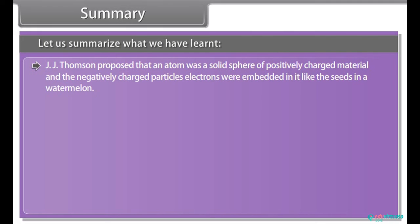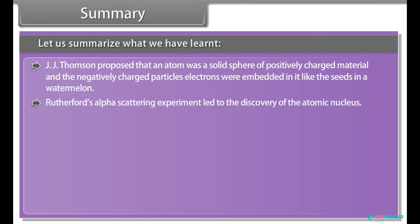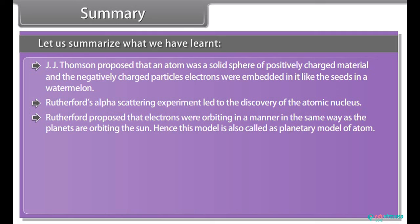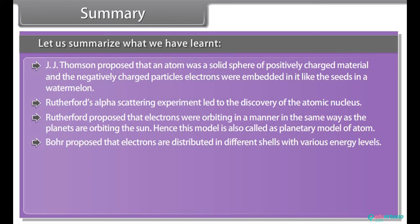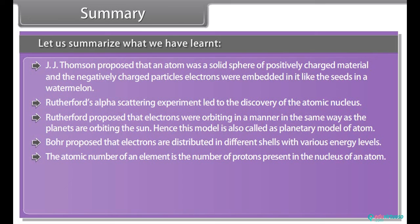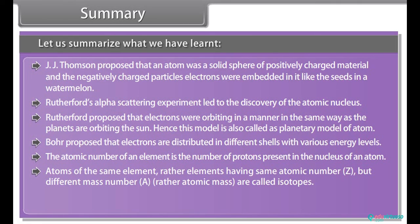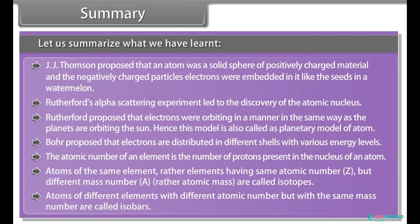Summary: J.J. Thomson proposed that an atom was a solid sphere of positively charged material, and the electrons were embedded in it like the seeds in a watermelon. Rutherford's alpha scattering experiment led to the discovery of the atomic nucleus, and he proposed that electrons orbit the nucleus in the same way as planets orbit the sun — hence called the planetary model. Bohr proposed that electrons are distributed in different shells with various energy levels. The atomic number is the number of protons in the nucleus. Isotopes are atoms of the same element with the same atomic number Z but different mass number A. Isobars are atoms of different elements with different atomic numbers but the same mass number.